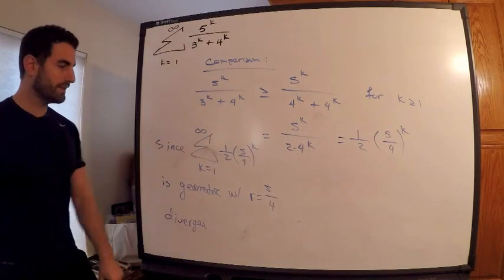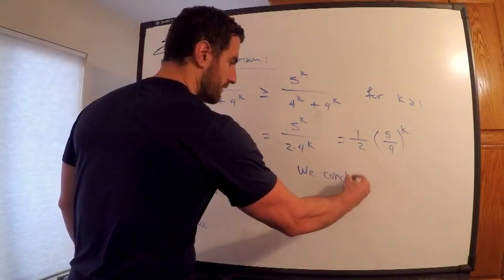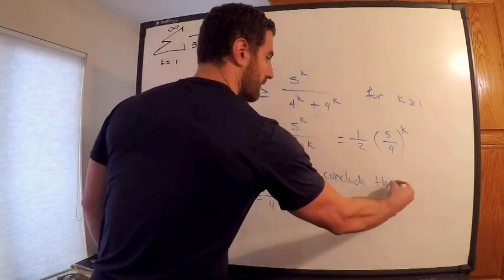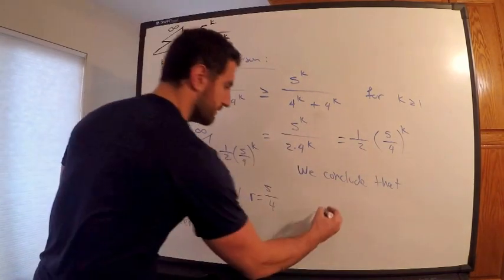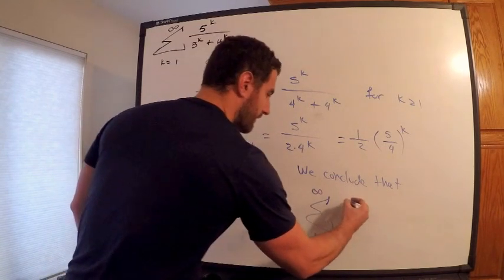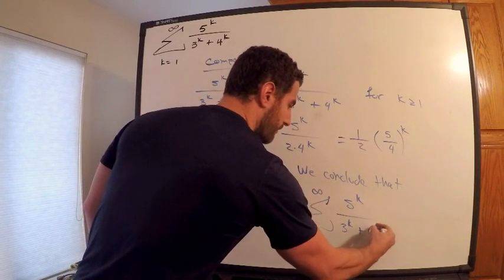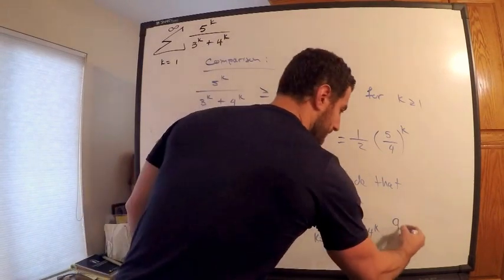And the one we're looking at is actually larger than it, we can conclude that this one also diverges. The series at hand, k equals 1 to infinity of 5^k over (3^k + 4^k), also diverges.